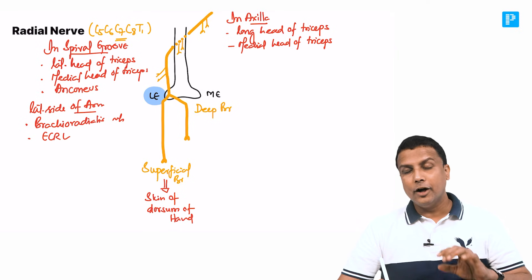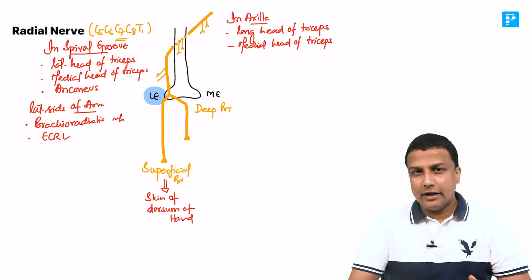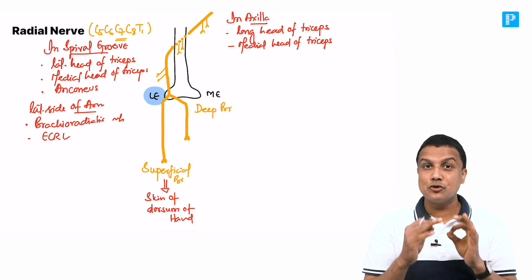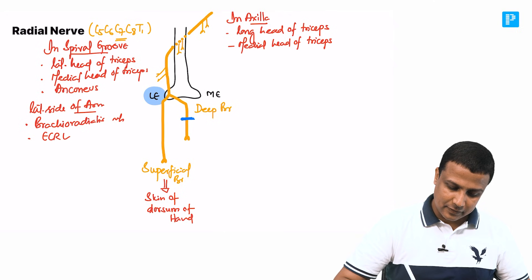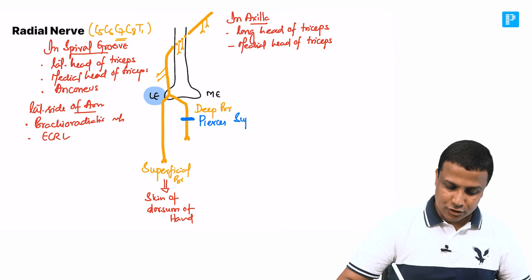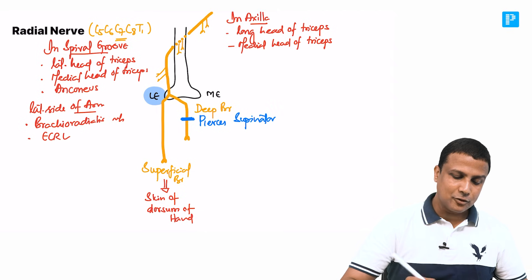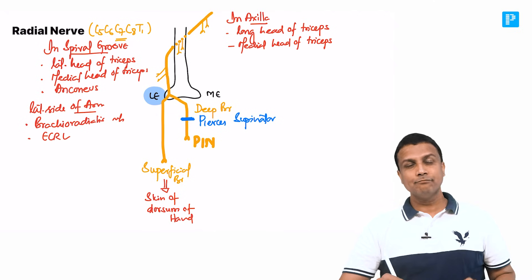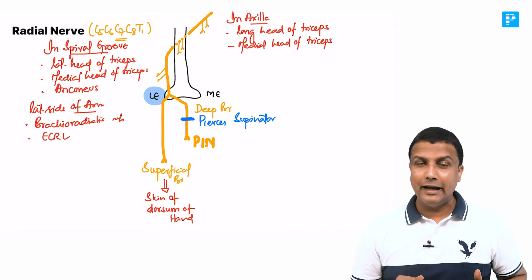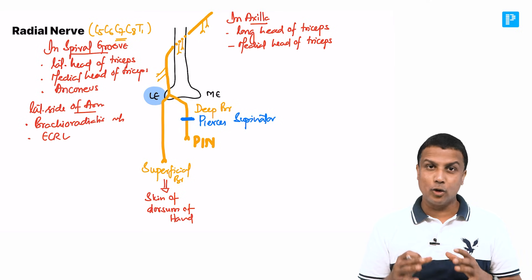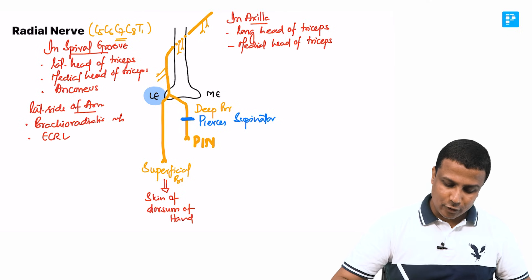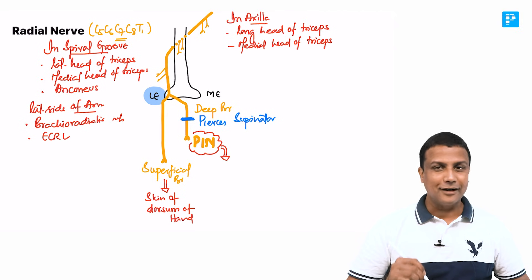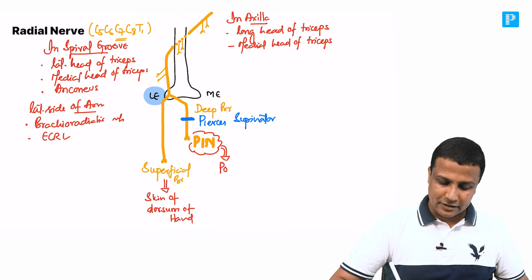The deep branch actually pierces through a muscle — the supinator muscle. After piercing the supinator muscle, it goes posteriorly and at that point the name of the branch changes: it is now referred to as the PIN, the posterior interosseous nerve. This posterior interosseous nerve supplies all the muscles present in the posterior compartment of the forearm.